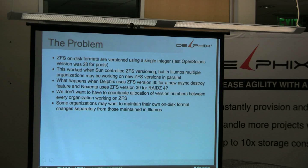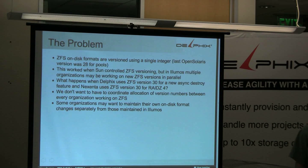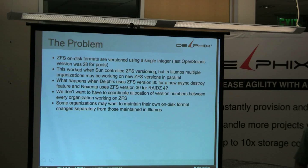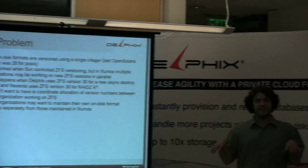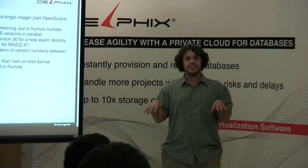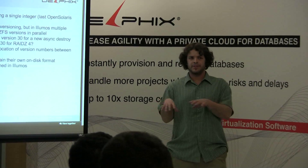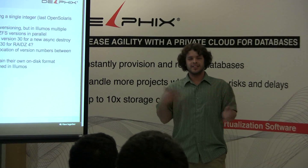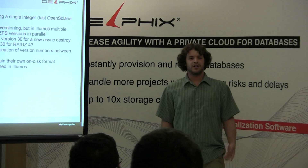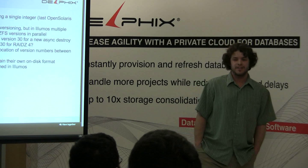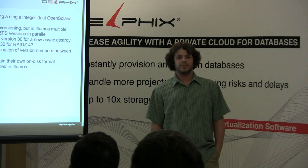When Sun was in charge of this, there was one entity that decided what's in each on-disk format change. Now it gets harder with multiple companies or even different organizations working on ZFS, where you can't really get them to agree that version 30 means this. And then you have the problem that 31 implies 30, which is kind of an artificial requirement unless there are actual dependencies there.